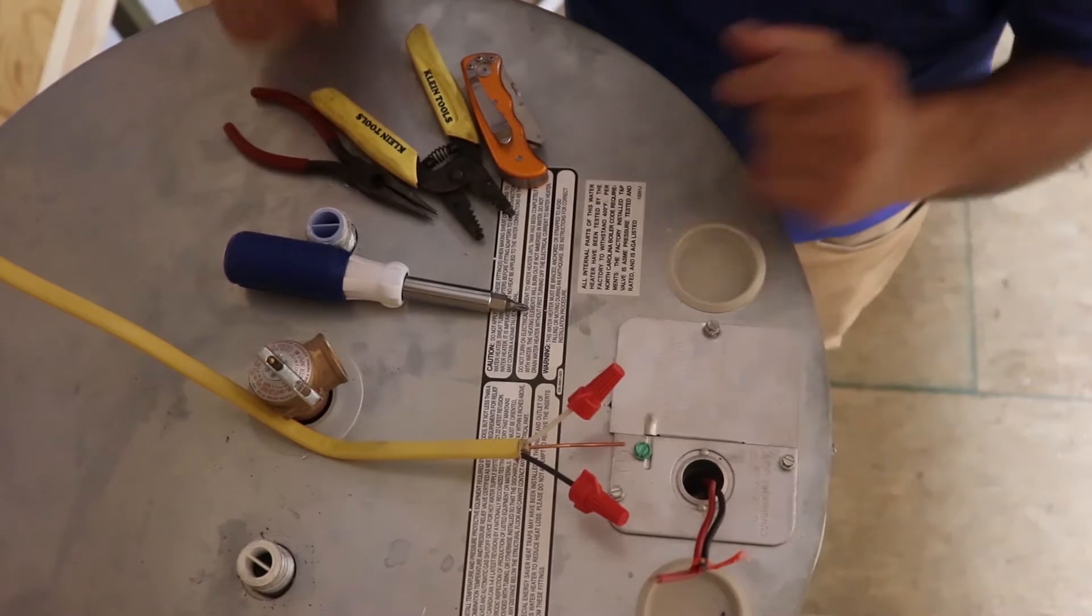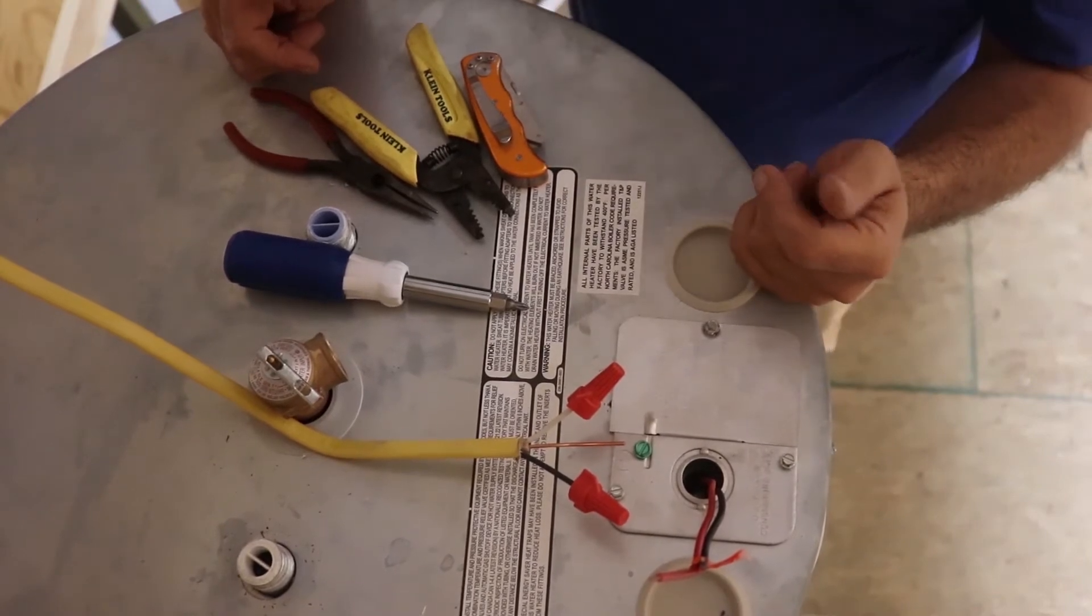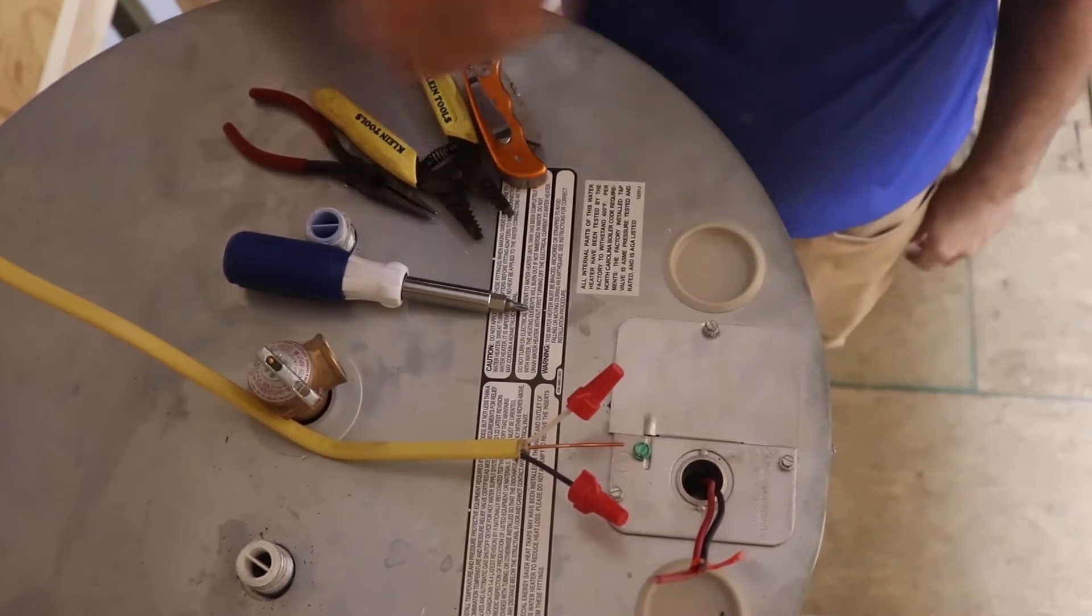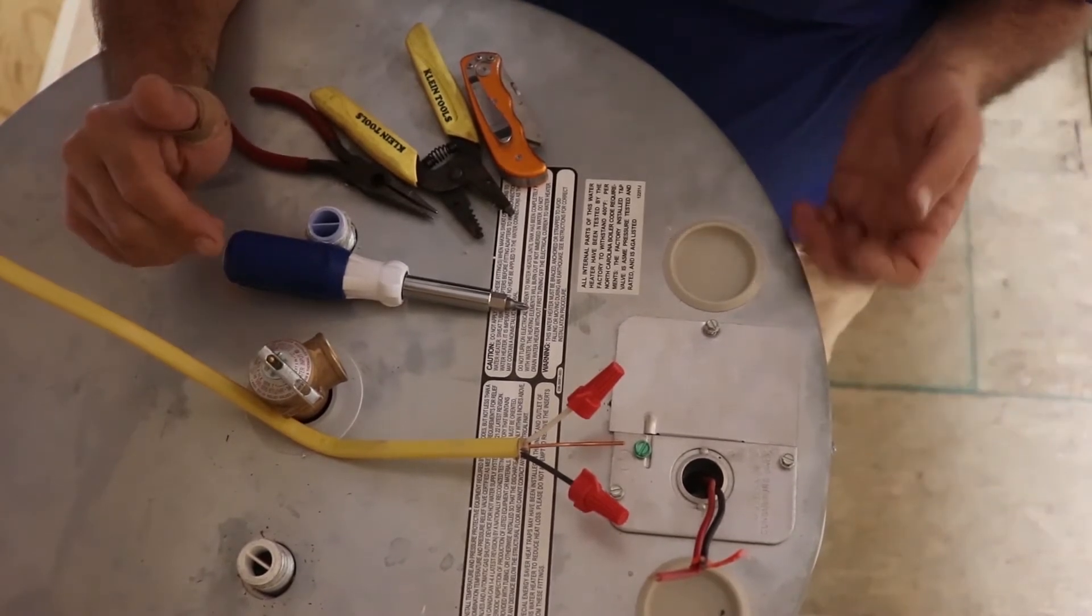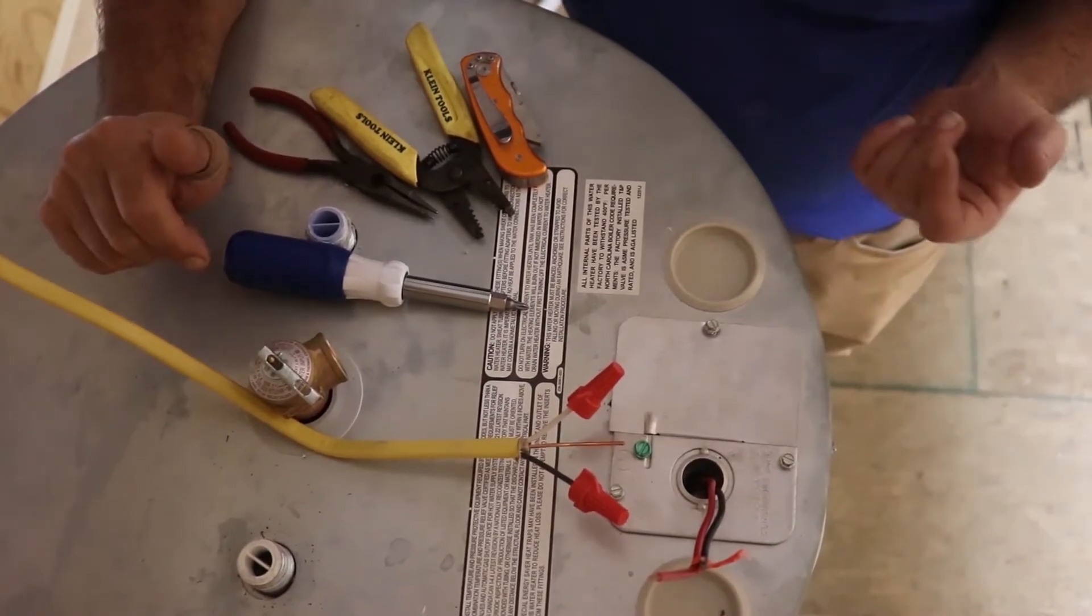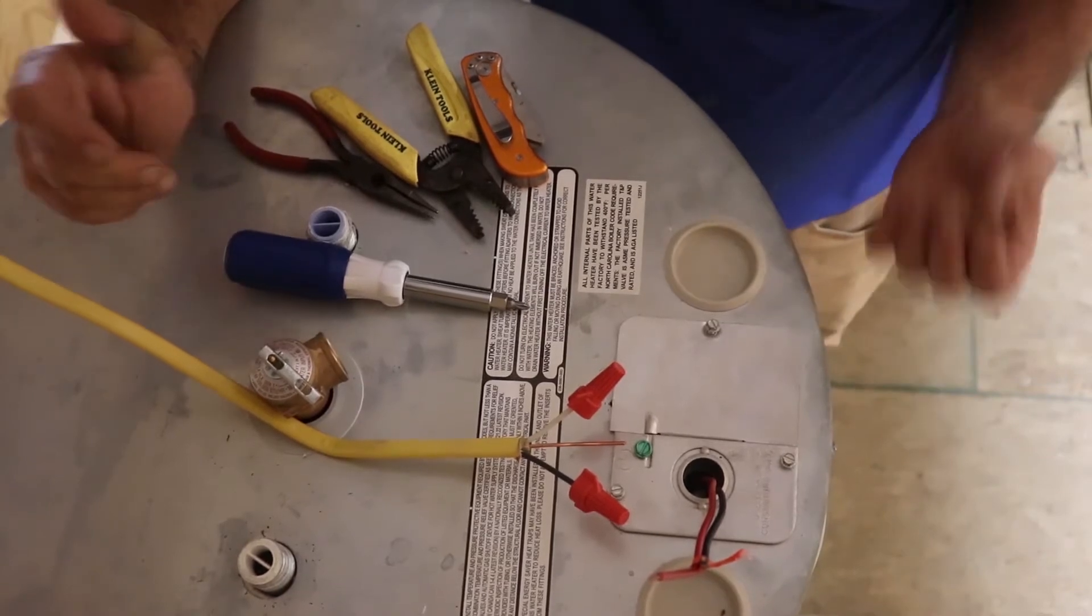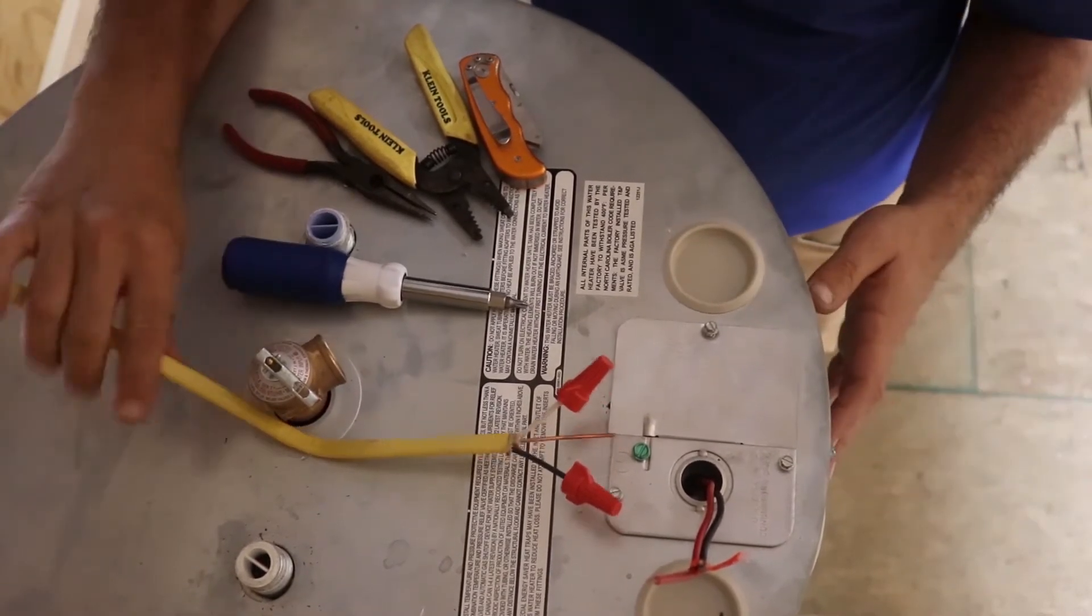Alright, now let's actually wire something up. This is just your regular old conventional style water heater. Now we do a lot of new construction and we do some service. Most of the time on a service call you're going to be pulling an old unit out and replacing a new unit.